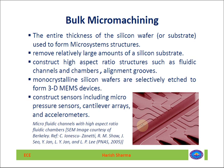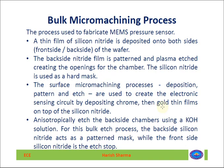In bulk micro machining, the entire thickness of the silicon wafer is used for micro system structures. It removes a relatively large amount of silicon substrate and constructs high aspect ratio structures — since it uses the entire thickness, the height versus width ratio for the built component is very high. Examples include fluidic channels, chambers, and alignment grooves. The height is considerably high, giving a very high aspect ratio, and it creates 3D MEMS devices. It can also construct sensors including micro pressure sensors, cantilever arrays, and accelerometers.